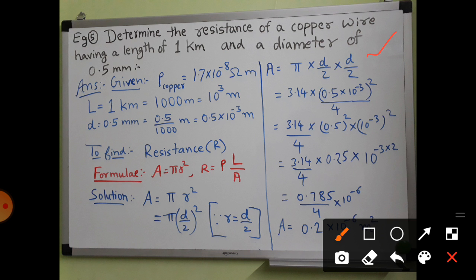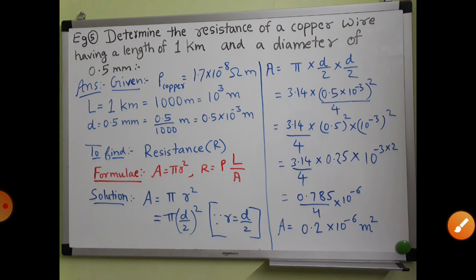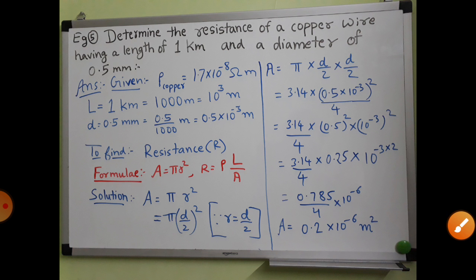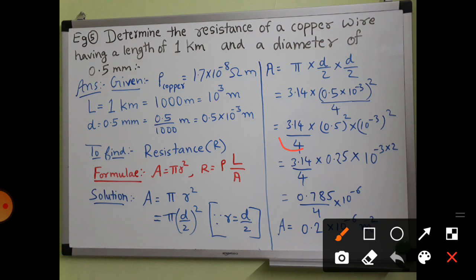So the area equals π × (d/2)². Opening the bracket: (d/2)² means (d/2) × (d/2). π value is 3.14, diameter is 0.5 × 10⁻³. We square 0.5 × 10⁻³ and put 2 × 2 = 4 in the denominator. So the expression becomes (3.14 × (0.5 × 10⁻³)²) / 4.